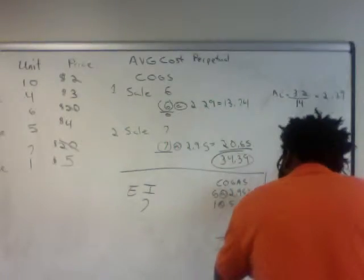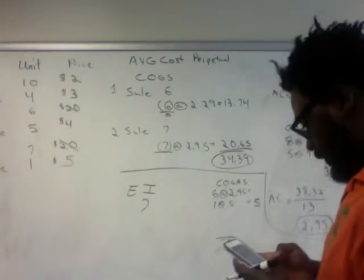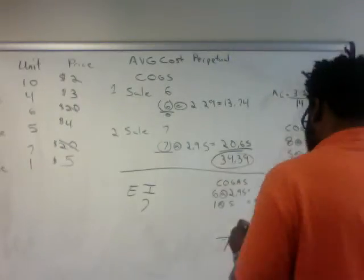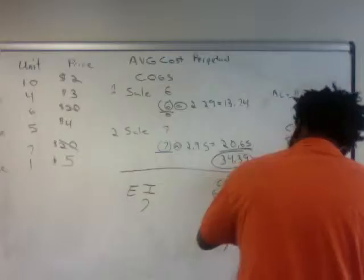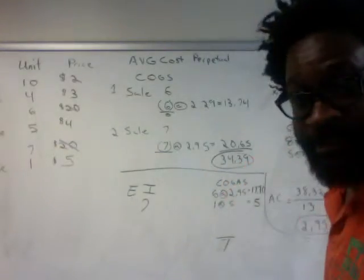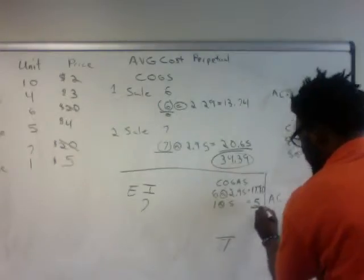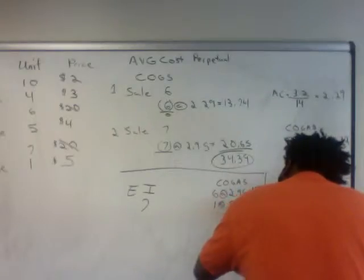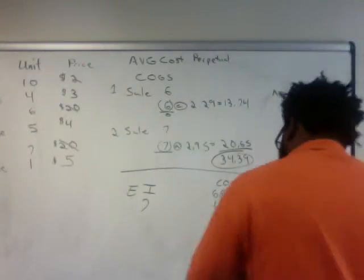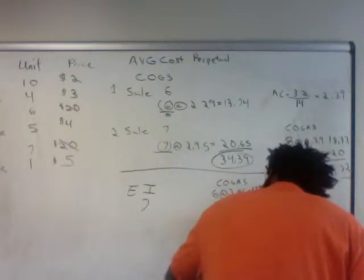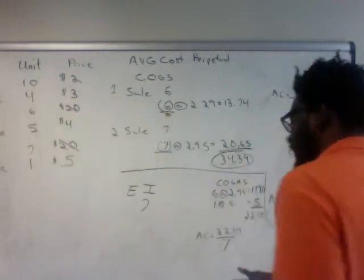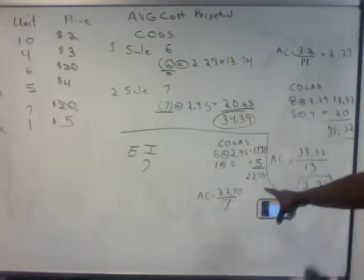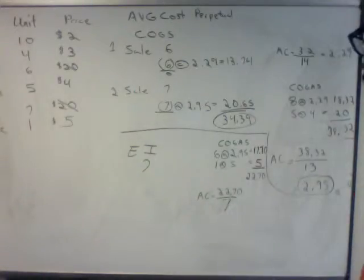We know that one times five is five. And six times $2.95 gives us $17.70. So we're going to add $17.70 plus $5, which gives us $22.70. That's going to be our numerator — $22.70 — for our new average cost calculation for ending inventory. So we have $22.70 that we're going to divide by seven units to get our average cost.